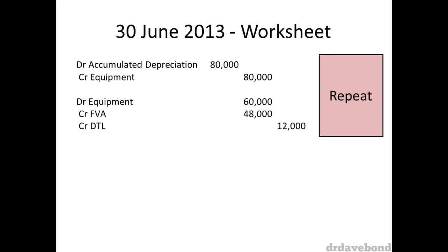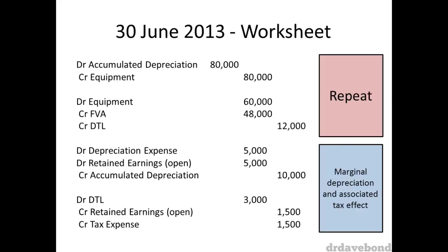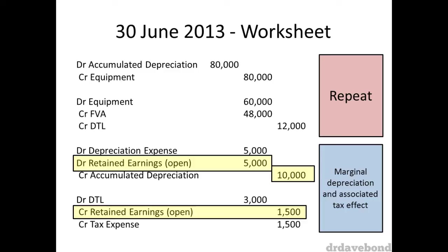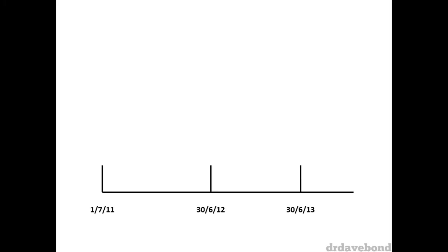Rolling forward another year, the fair value adjustments get repeated. The depreciation and tax effect is repeated, although tweaked slightly. In this case, we need to not only recognise the depreciation expense for the current year, but also the effect of prior depreciation expenses on retained earnings, as well as the cumulative effect on accumulated depreciation. As two years have gone by since the date of acquisition, retained earnings need to be adjusted to reflect prior year profit effects of this fair value adjustment, and accumulated depreciation needs to show two years' worth of the additional depreciation. We do a similar thing for the tax effects, with last year's impact on profit showing up in retained earnings, and DTL being adjusted for two years. A timeline helps explain this, and I would urge you to use them when working on these sort of questions.